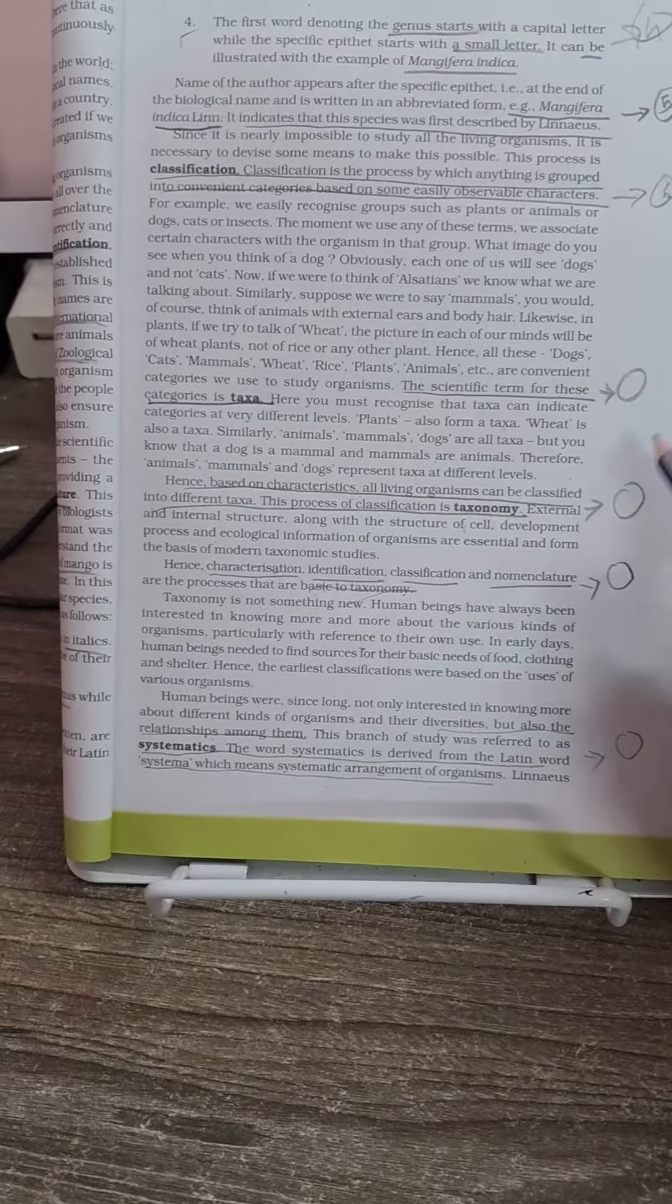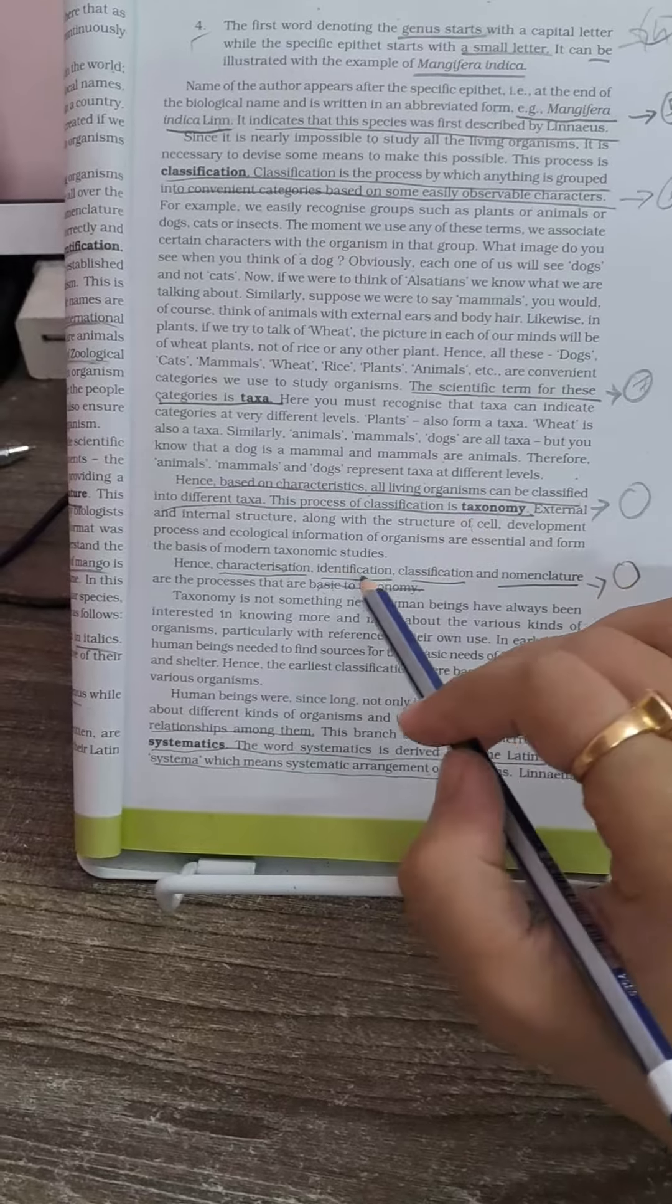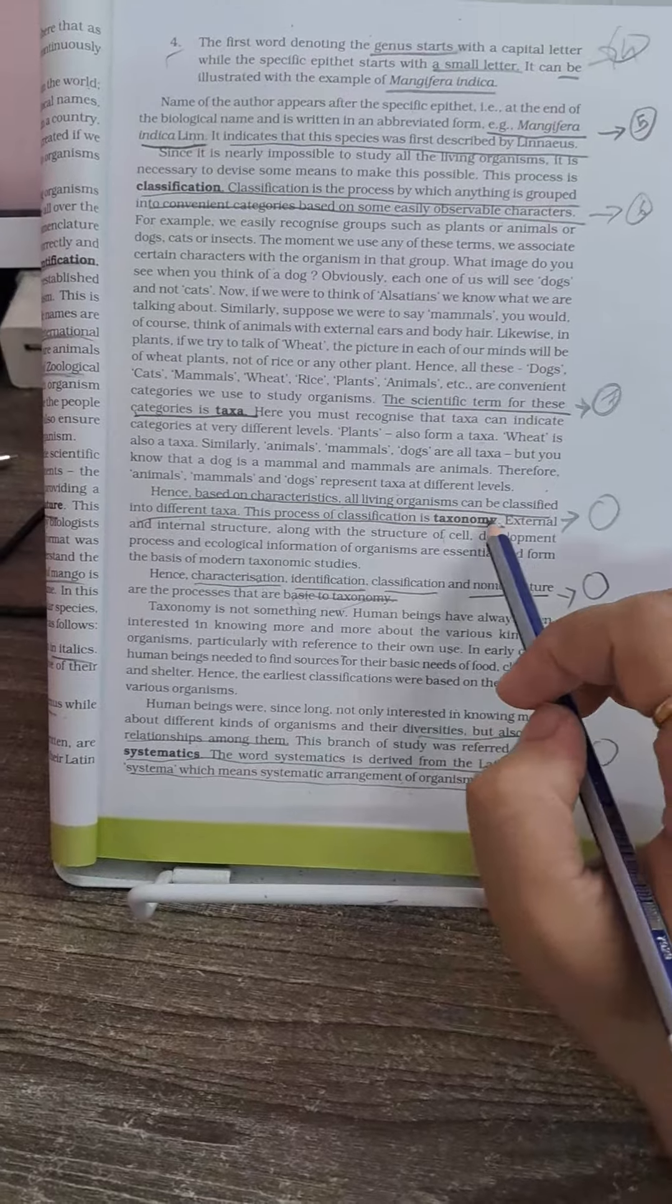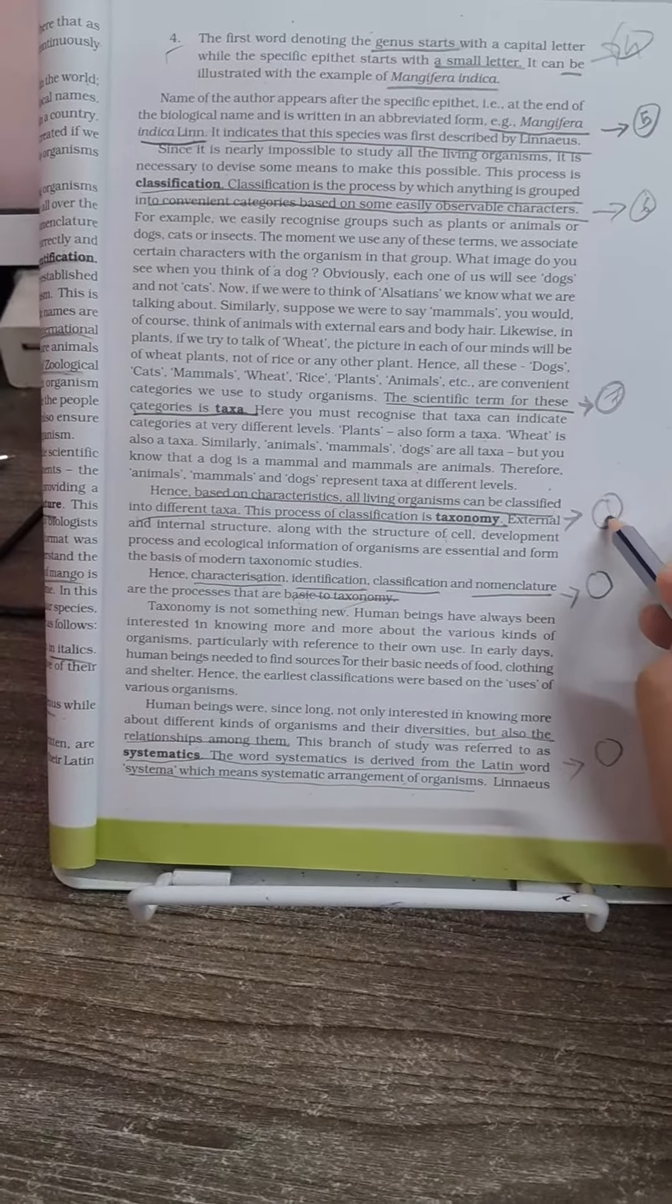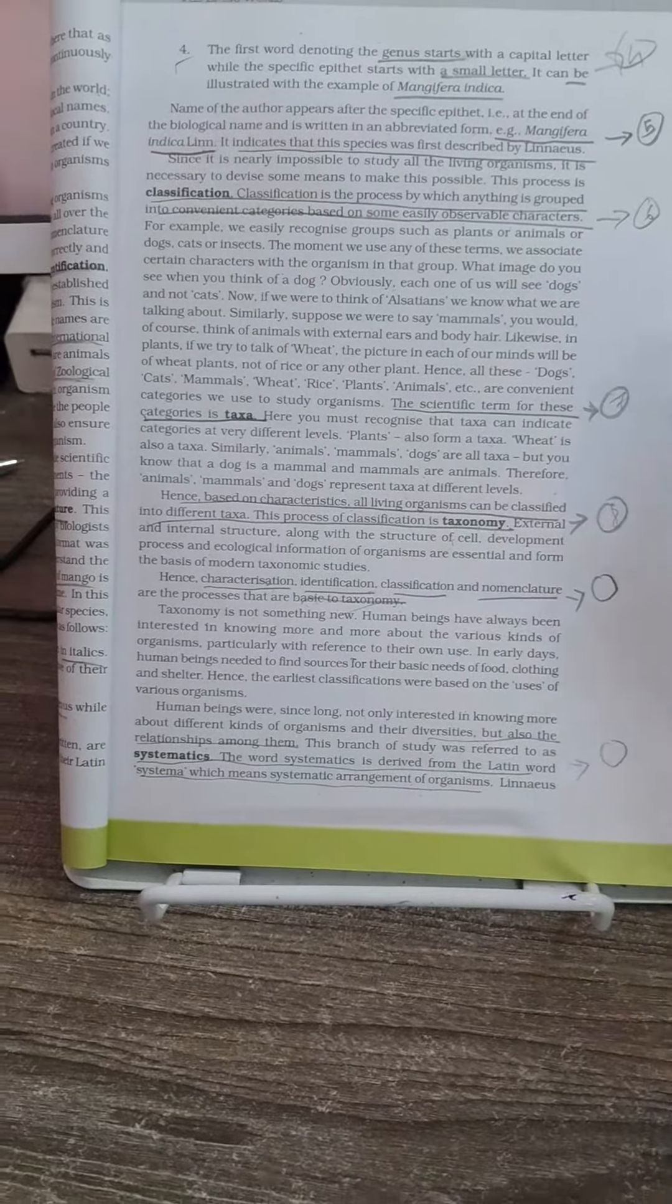The next potential MCQ is from the definition of taxonomy and the basics of taxonomy. You have to be very clear about the definition of taxonomy because it has been asked, and they will try to confuse you with the definition of taxonomy and classification. So you have to be very clear.